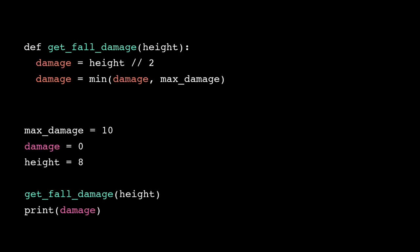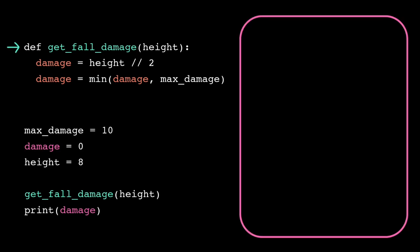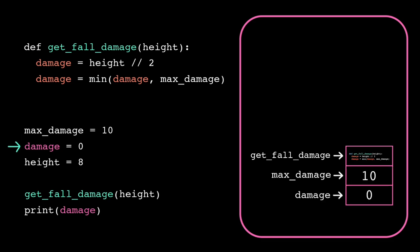The scope of a variable describes the region of the program where we can access it. When we run this program, the computer will store the instructions for the getFallDamage function in short-term memory, then it'll store the variables maxDamage, damage, and height.